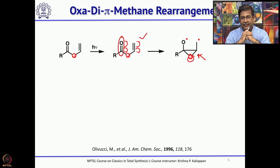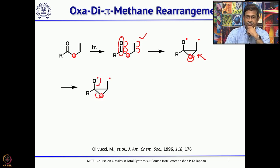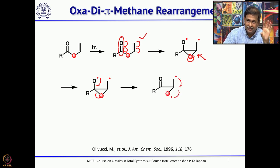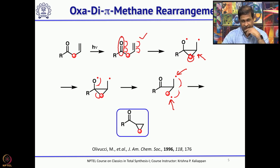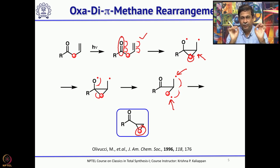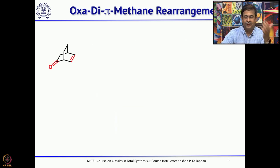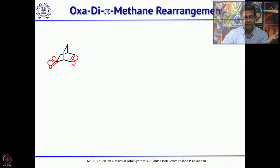The diradical will open up to regenerate the original ketone and produce a resultant diradical. The two radicals then combine to form the cyclopropane. Basically, oxa-di-pi-methane rearrangement results in cyclopropane formation. This can be done on bicyclic or tricyclic systems. In a bicyclic system example, a tetra-radical forms and immediately gives a cyclopropane.